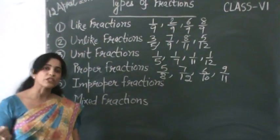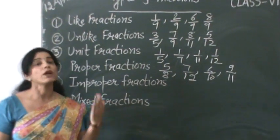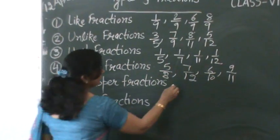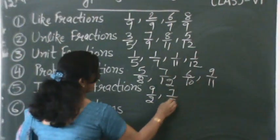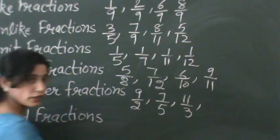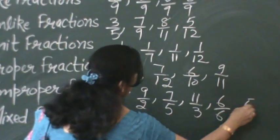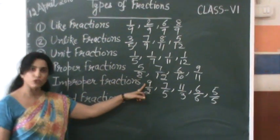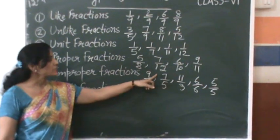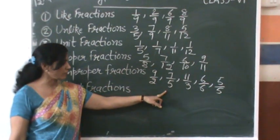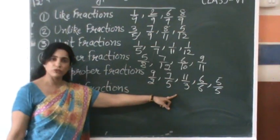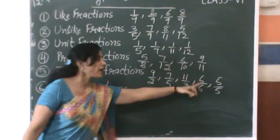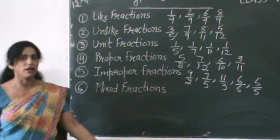Improper fractions. Fractions where the numerator is bigger than or equal to the denominator are called improper fractions. For example, 9 by 2, 7 by 5, 11 by 3, 6 by 6, and 5 by 5 are all called improper fractions, where 9 is bigger than denominator 2, 7 is bigger than 5, 11 is bigger than 3, and 6 upon 6 and 5 by 5 have numerator and denominator the same.